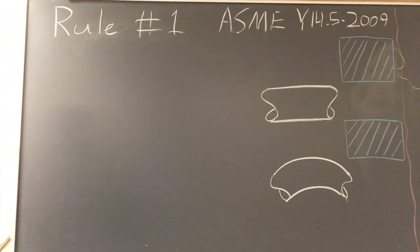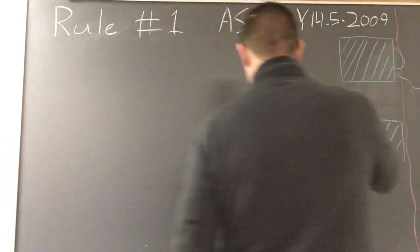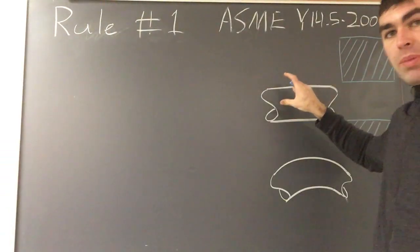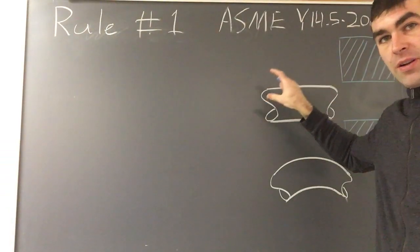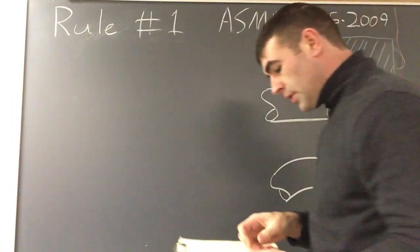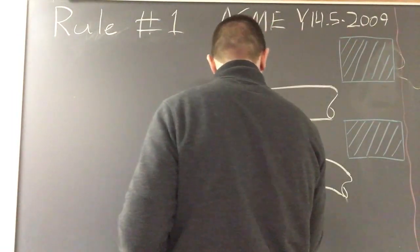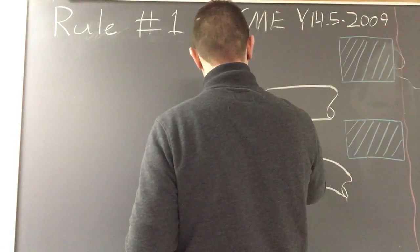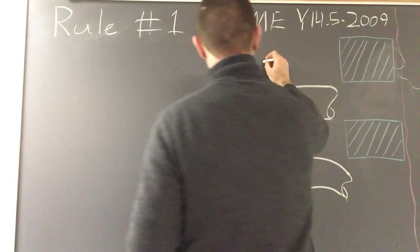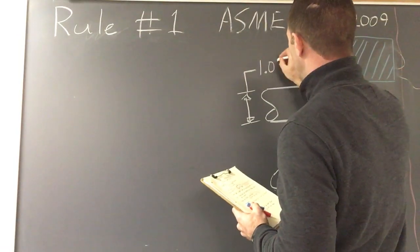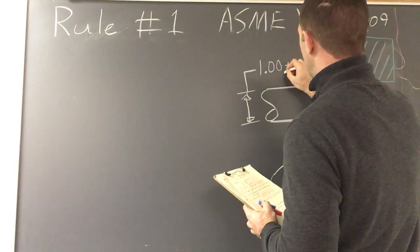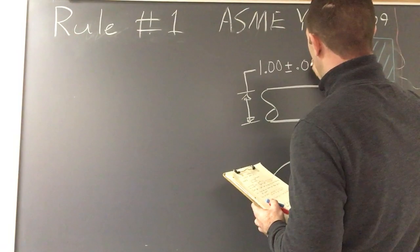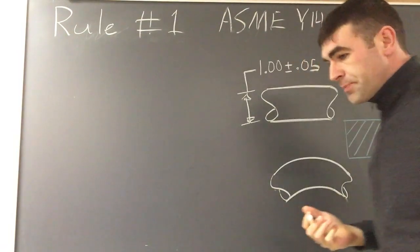So let's say we have a part that's just going to be a pin with a dimension and a length. So we say it's got some dimension. We'll say 1.00 plus or minus 0.05. Okay, easy enough.